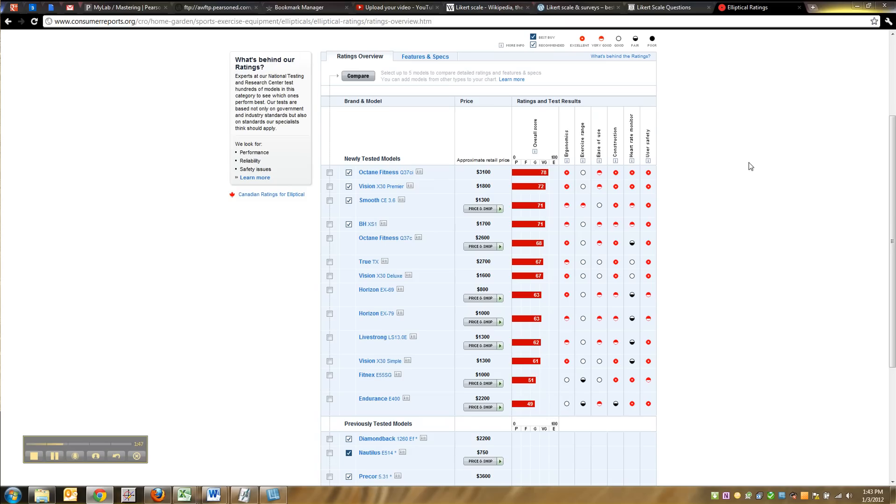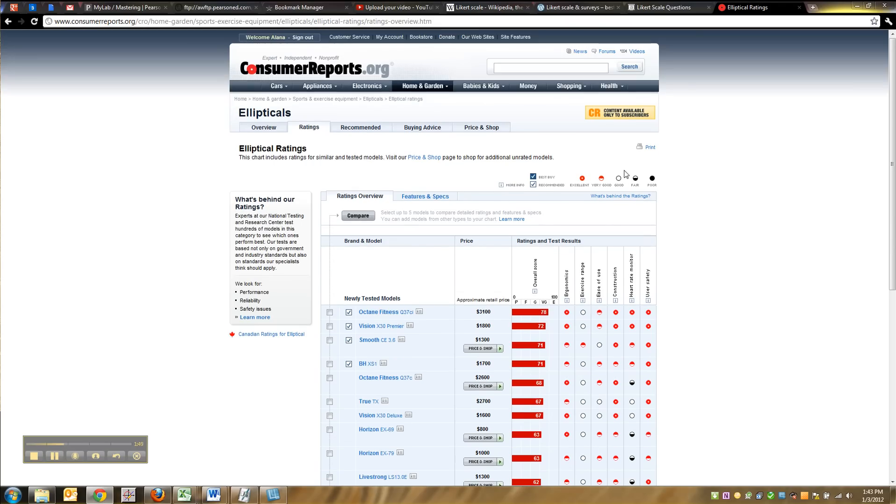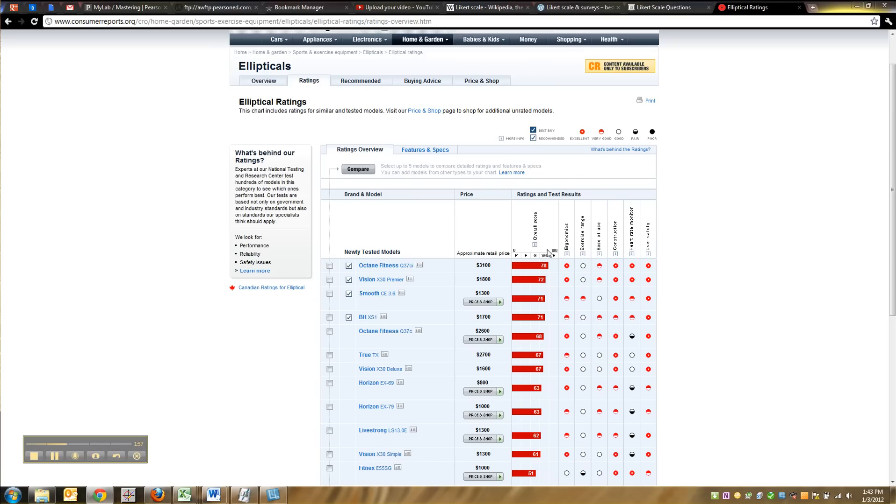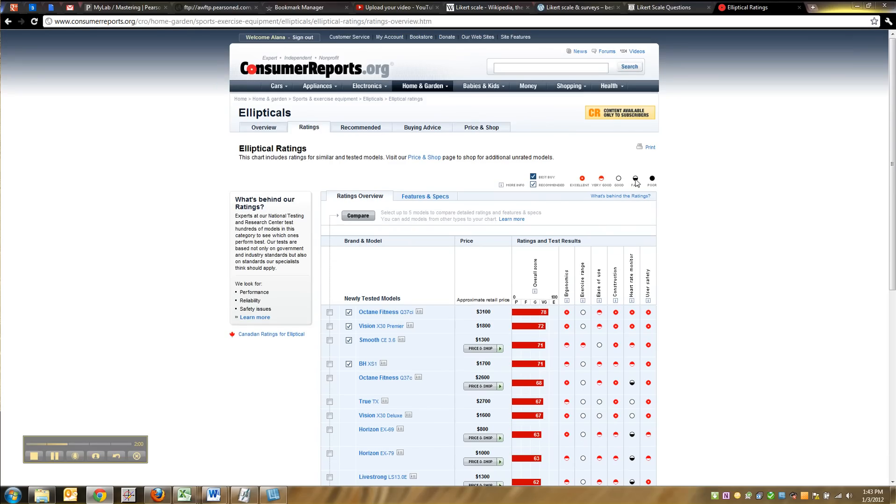Like magic. I just wanted to show you something else. For example, here on Consumer Reports, the reviewers compile their answers. This was looking at elliptical trainers here. And they have excellent, very good, good, fair, poor. That's a Likert scale. And they're using it to show the ergonomics of this elliptical were excellent. The exercise range was only good, and so on. So it's giving you Likert scale ratings for these different items.